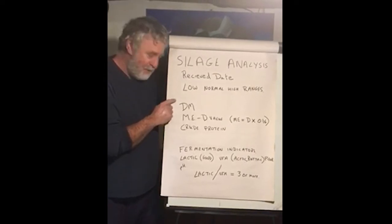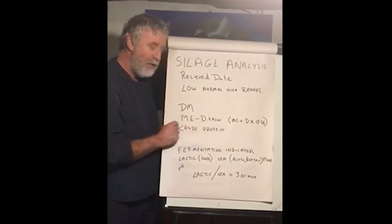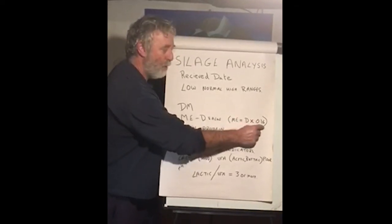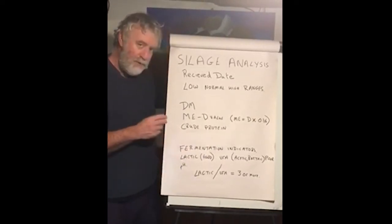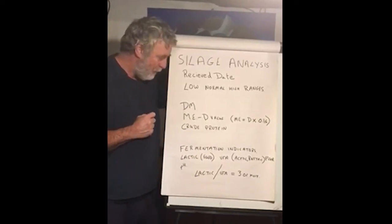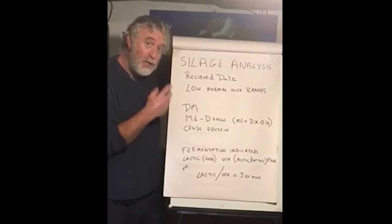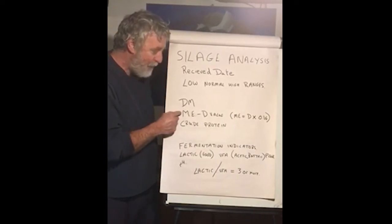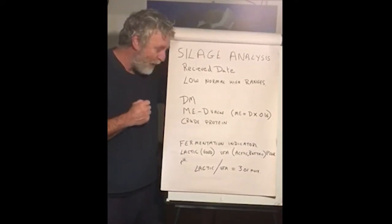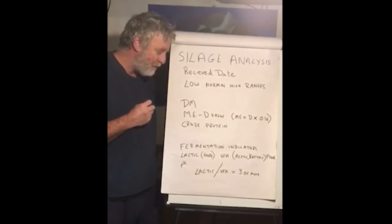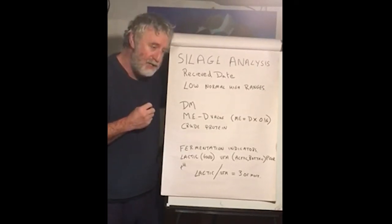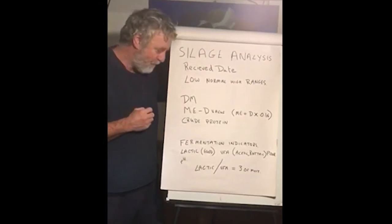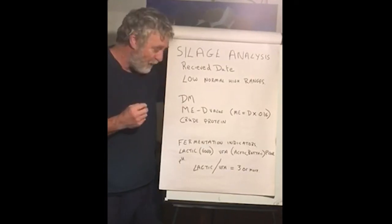The key parameters are the dry matter, the ME or D value — these are related because the ME equals the D value multiplied by 0.16 — and then the crude protein. For high producing animals, we want a dry matter in our clamp silage of between 30 to 32 percent ideally. ME of as close as possible to 12, because that means we've got more nutrition in that silage and it'll be highly digestible, meaning that intakes can be increased. For crude protein, we want somewhere above 16 percent — 16 to 18 percent — in our grass silages.